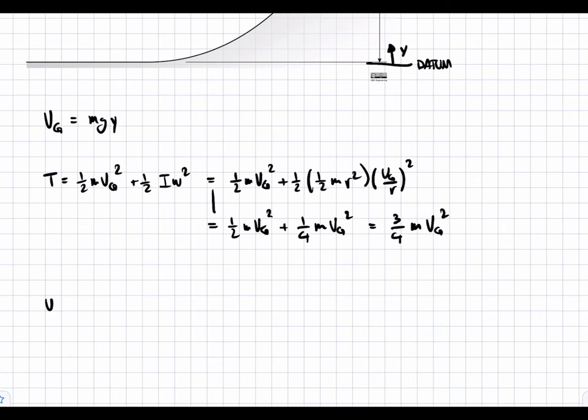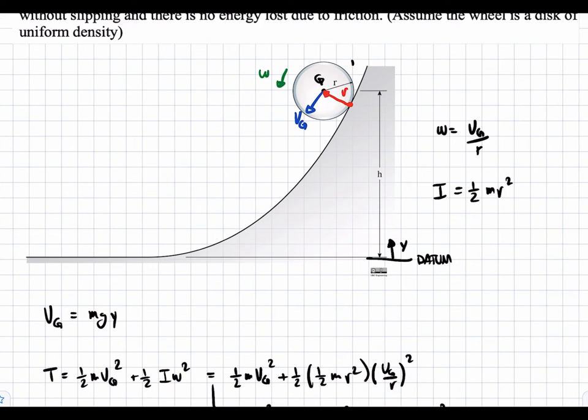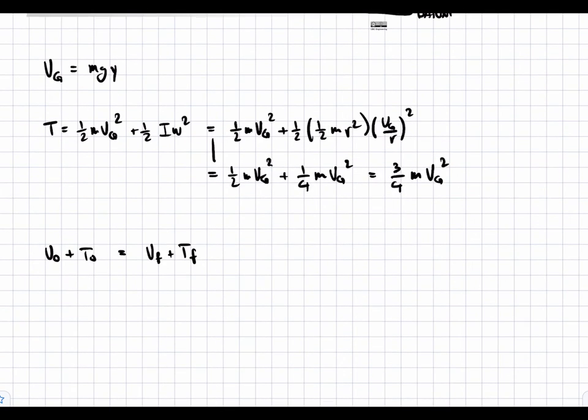At the initial state, v0 plus t0, we have the same energy at the final state, which is vf plus tf. So, this is the initial state, or zero. And when the wheel rolls down to this point over here, this is the final state.